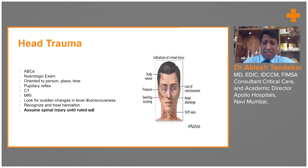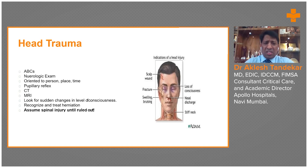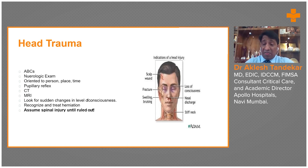Coming to specific injuries like head trauma, the primary survey remains the same — airway, breathing, circulation, disability, exposure — and neurological examination also remains the same. We need to assess whether the patient is oriented to time, place, and person. Pupillary reaction is very important and urgent CT scan is very, very important. The CT scan will help us evaluate what kind of bleeding it is, for example extradural hematoma, which has a high propensity to expand.